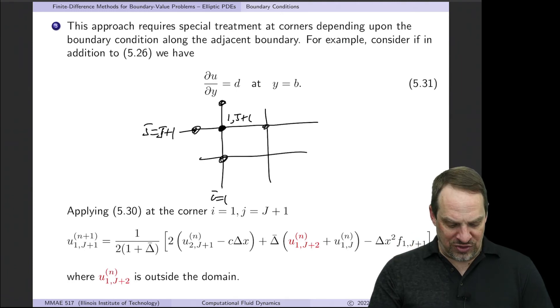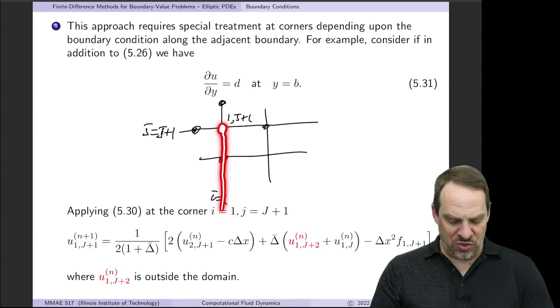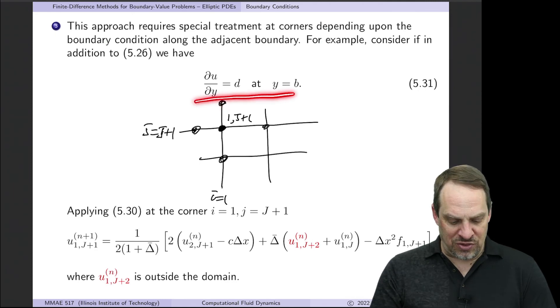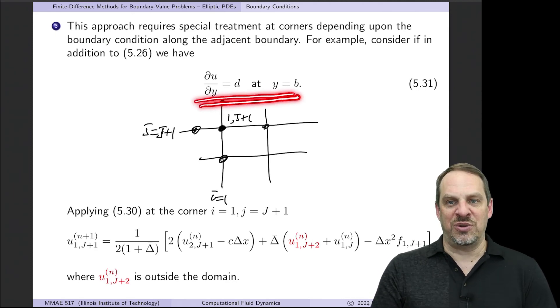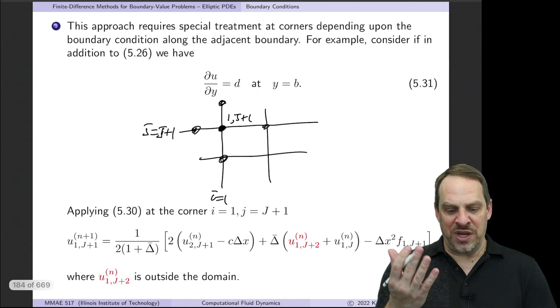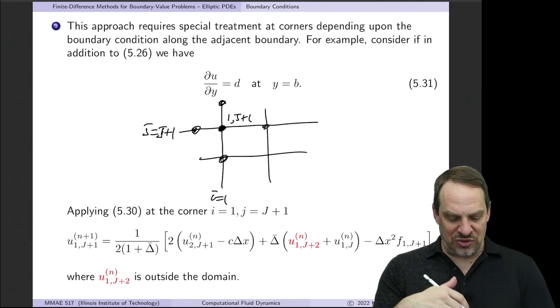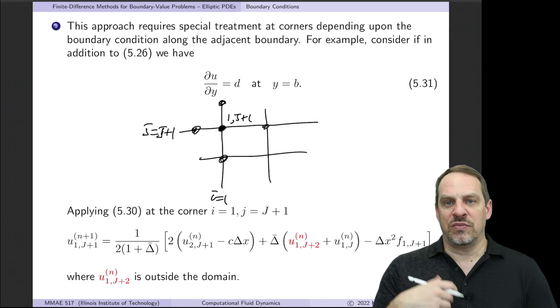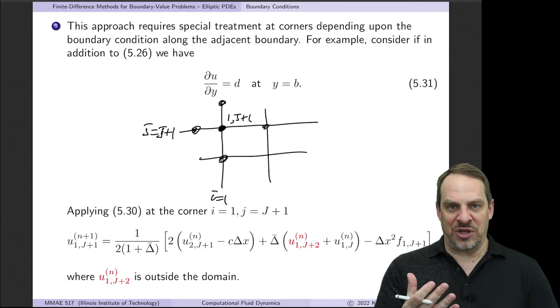Well, it's just more of the same. You take the equation that we developed for I is equal to one on the previous slide. You apply it at the upper left hand corner when I is one and little J is capital J plus one. That's going to involve this point outside the domain. You again use a second order accurate central difference approximation on the boundary condition, solve for that point outside the domain, and substitute it back in and eliminate it in your general equation.